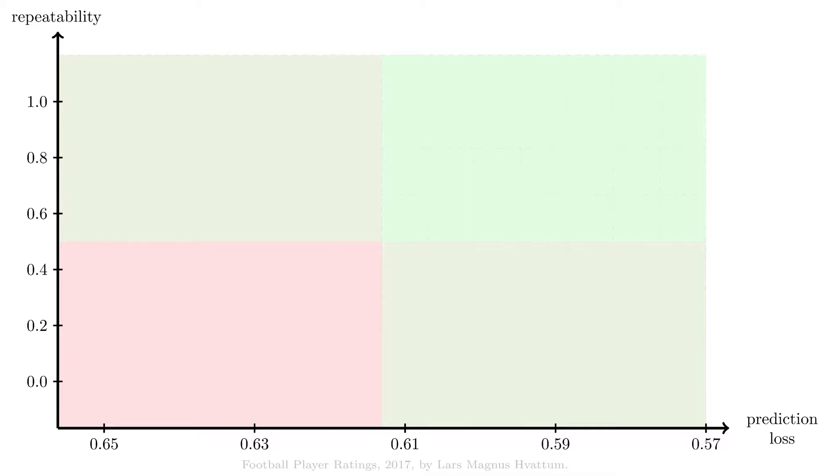Let us consider some benchmarks, so that we can tell how good or how bad our current rating systems are. The first benchmark is if we just assign ratings completely at random. This is about as bad as we can get. It gives a repeatability value of 0, as there is no correlation between random ratings. We get a prediction loss close to 0.65.